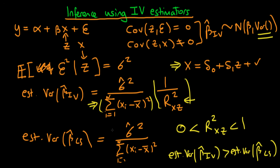To reiterate: if we have a very weak instrument — essentially delta 1 in the first-stage regression is equal to 0 — that implies the R-squared from this regression will be very close to 0. When we divide by something very very small, the estimated variance of beta hat IV blows up. So with a weak instrument, the variance of our IV estimator is very high and much greater than beta hat least squares. This makes a lot of sense: if there's only a very weak correlation between Z and X, sampling error is going to affect things much more significantly.